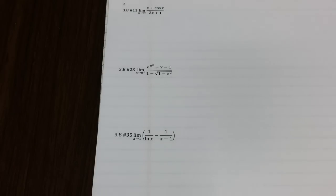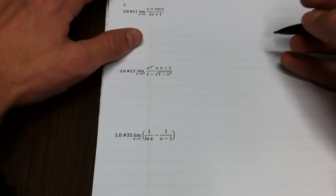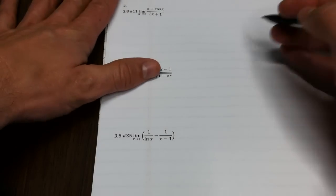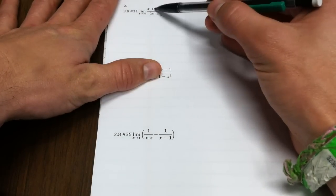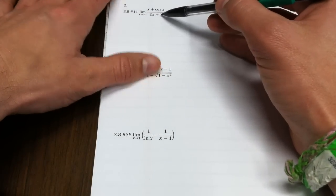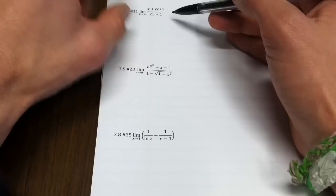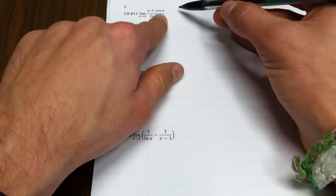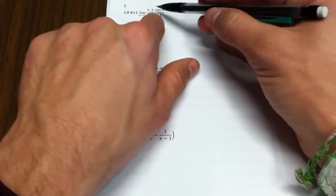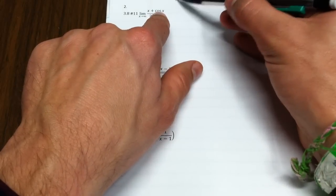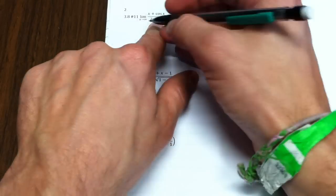We're going to evaluate a number of limits. This is from a section on L'Hôpital's rule, so that'll probably be our plan A if possible. We'll take the limit as x goes to infinity of the quantity x plus cosine x over 2x plus 1. The numerator goes to infinity, the denominator goes to infinity, so this is a candidate for L'Hôpital's rule.